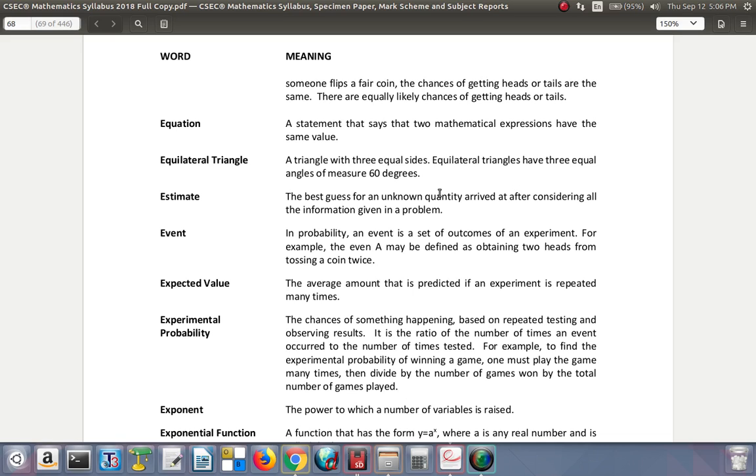Equilateral triangles have three equal angles of measure 60 degrees. You know that all the angles, the three angles add up to 180 degrees. So each must be 60 degrees if they are equal. 60 times 3 gives you 180.